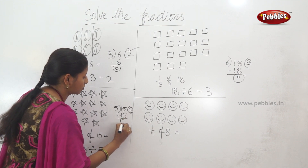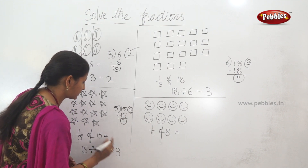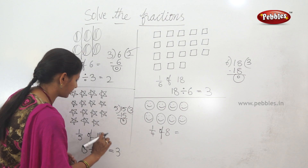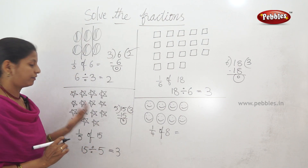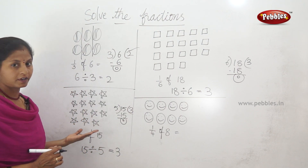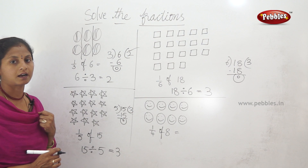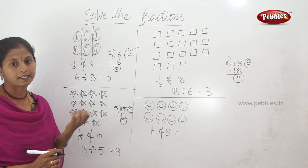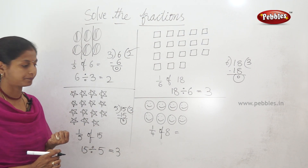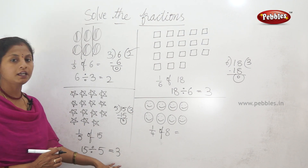So, I will make a division. How many stars are there? 1 by 5 of 15. The answer is 3 stars. 1 by 5 of 15 equals 3.